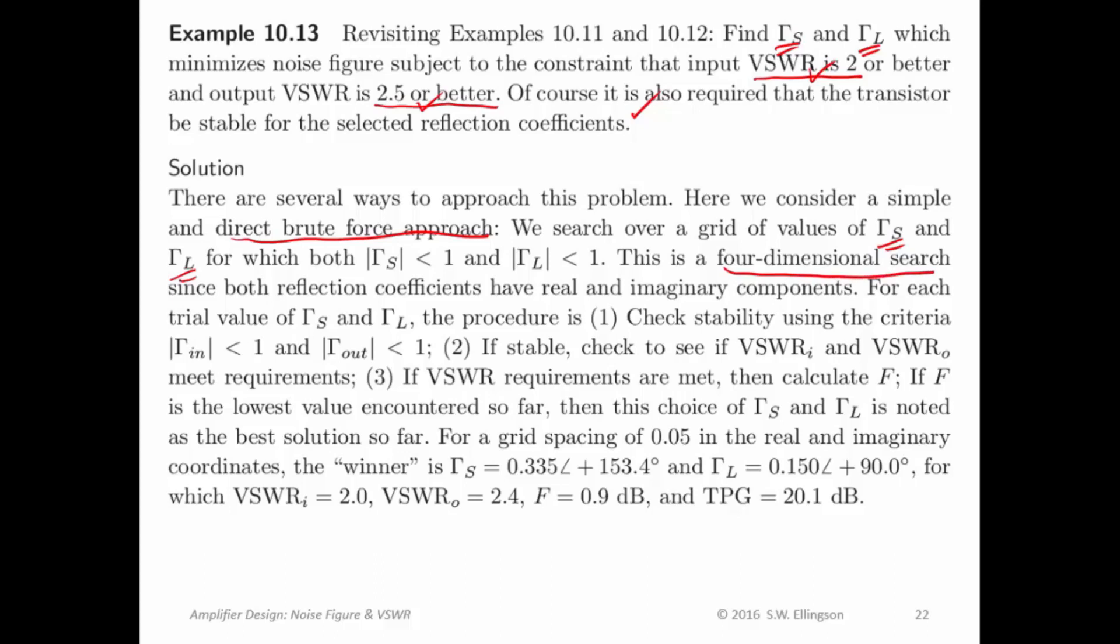That's a four-dimensional search, right? Because gamma sub S has real imaginary components. Gamma sub L has real imaginary components. So, you're searching over the Smith chart. All the values of gamma sub S and gamma sub L are within the unit circle. And you're just systematically marching through all the possible values of gamma sub S and gamma sub L. So, that's a four-dimensional search.